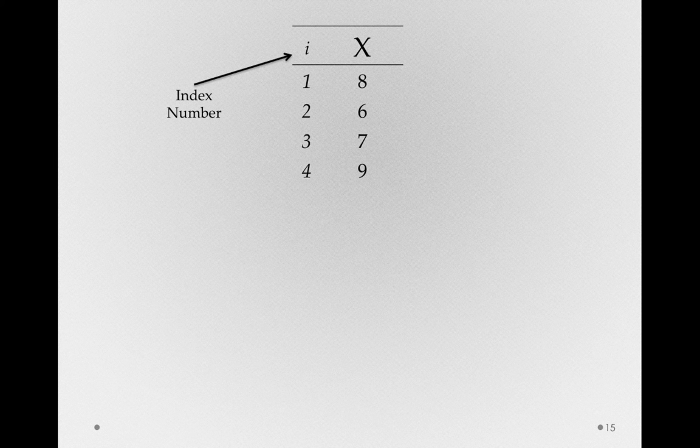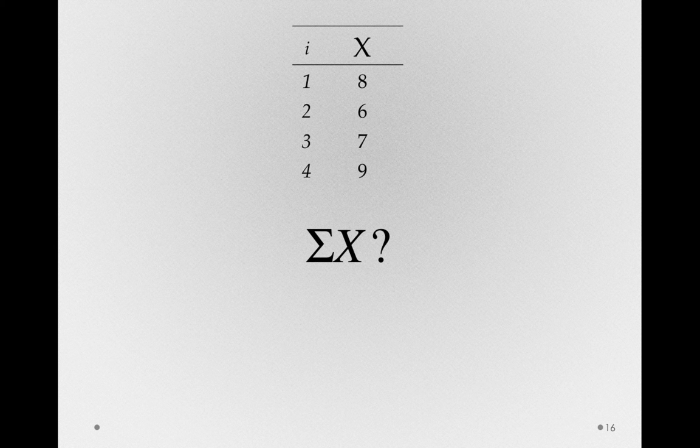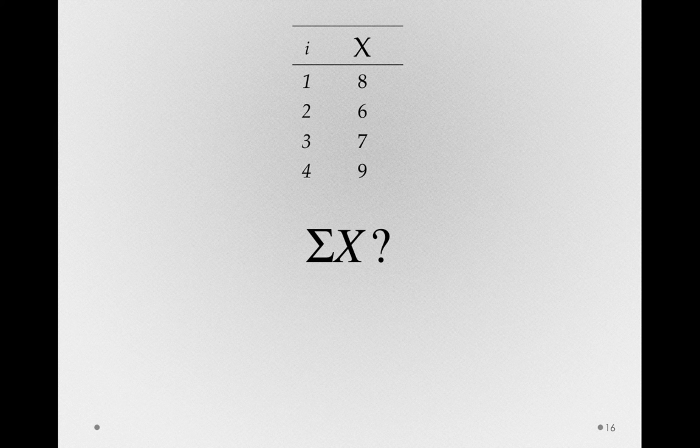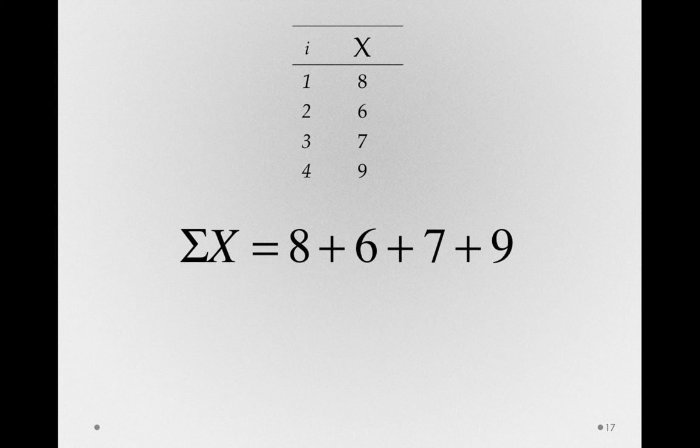All right, let's come back to sum of x. Now, what does this actually write out or read out to be? Remember that the sigma there just means take the sum of. So, this says take the sum of all the x observations, which literally says 8 plus 6 plus 7 plus 9, or 30.